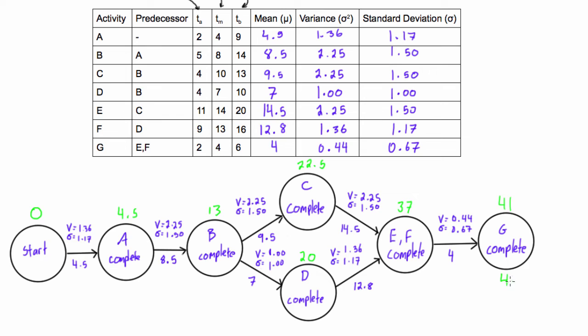All right, so we bring this down - 41, just like we were doing in the other types of network diagrams. And now we'll do our backward pass for the late times. We'd have 41 minus 4, that gives us 37. 37 minus 14.5, that gives us 22.5.